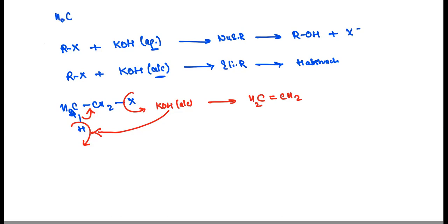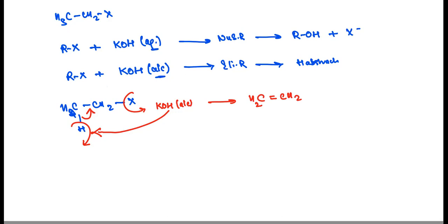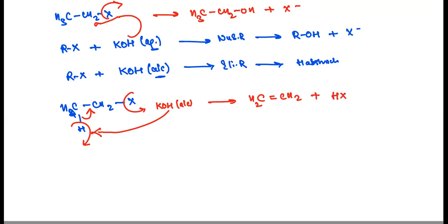So if we have CH3CH2X, but this time we have used alcoholic KOH, then what happens — the OH attacks on this carbon, X leaves, and the product you get is CH3CH2OH, along with X minus and HX. So this is different. In one case you get alcohol via nucleophilic substitution, and in the second case you get elimination giving an alkene.